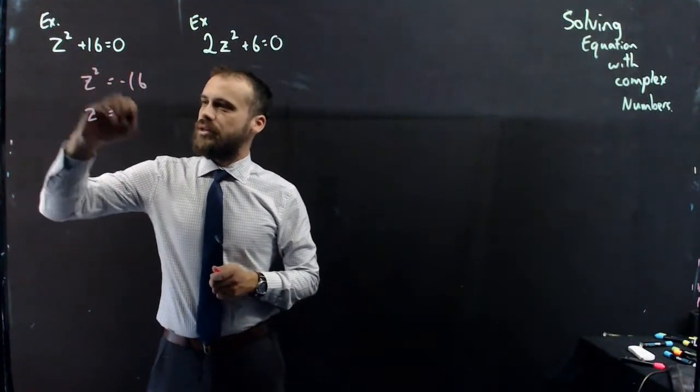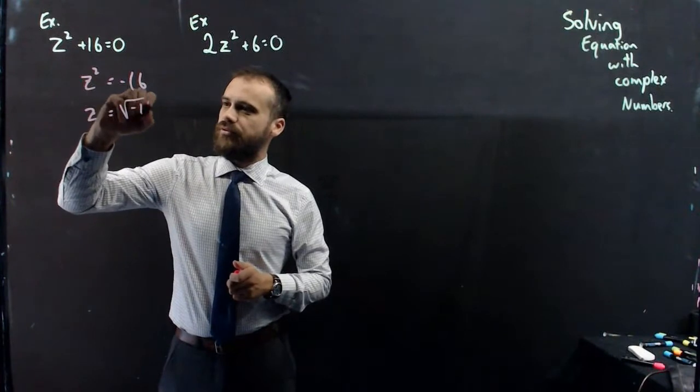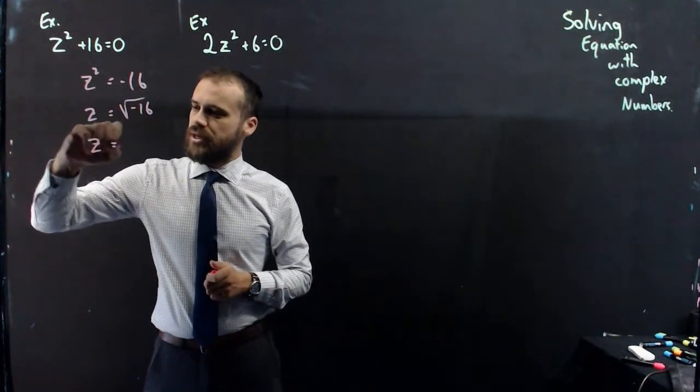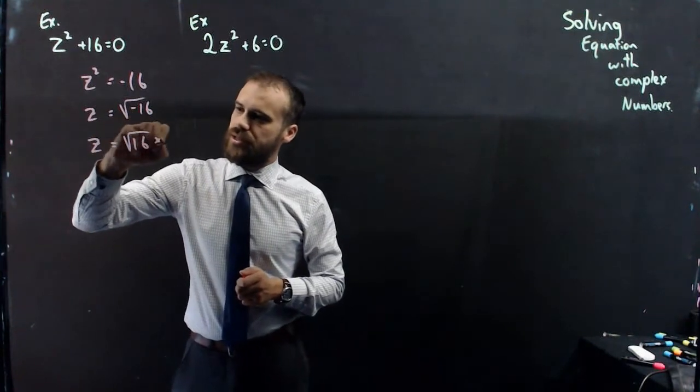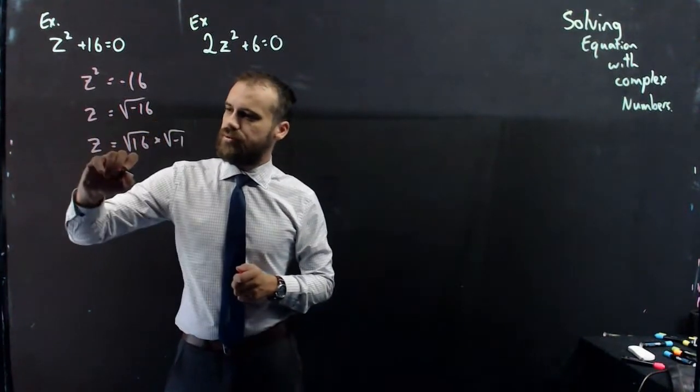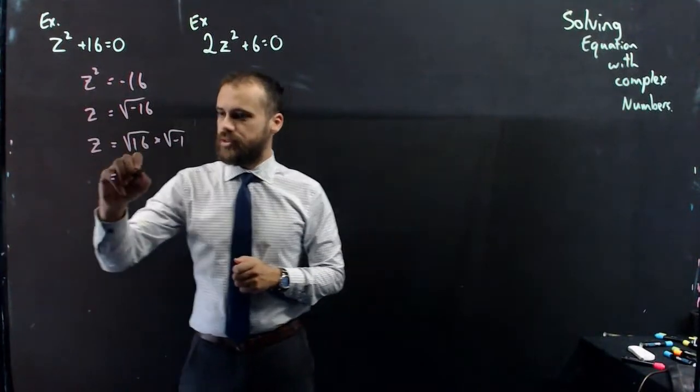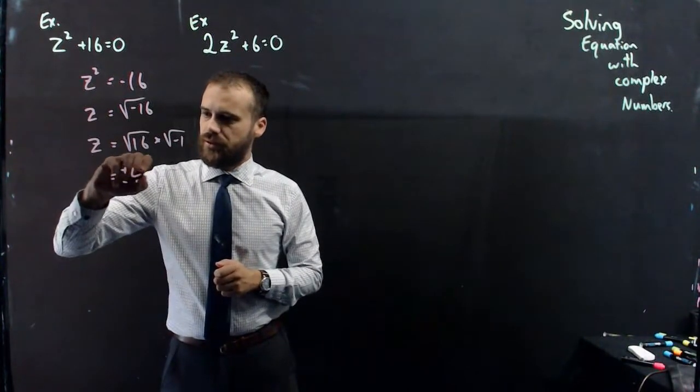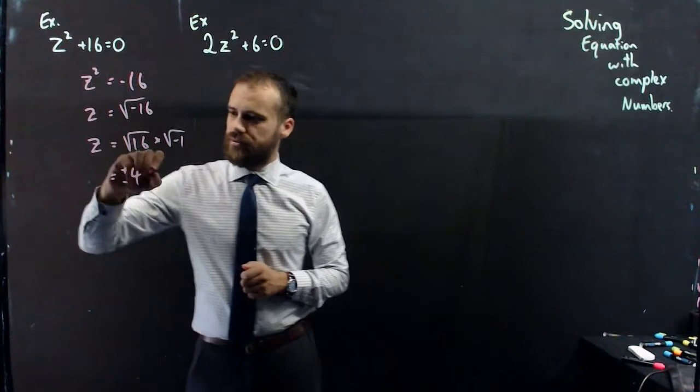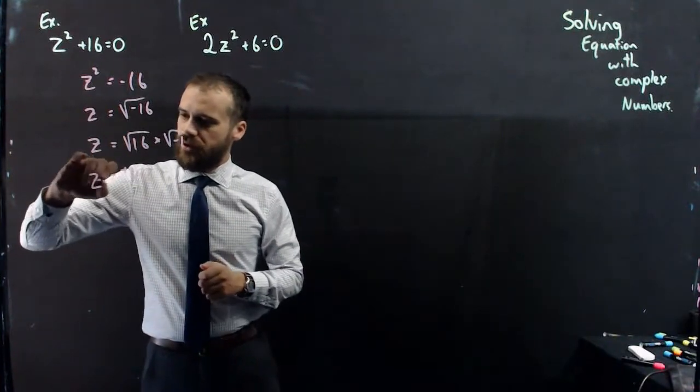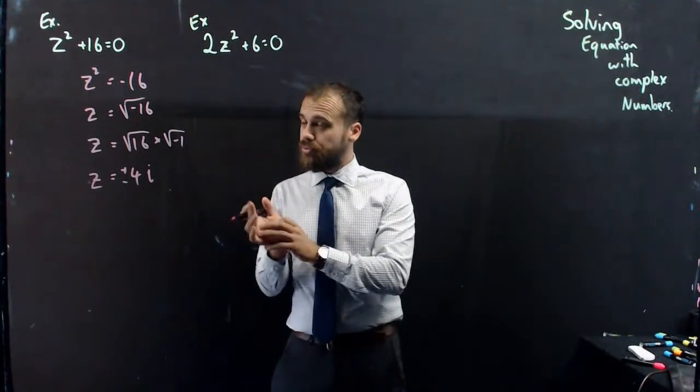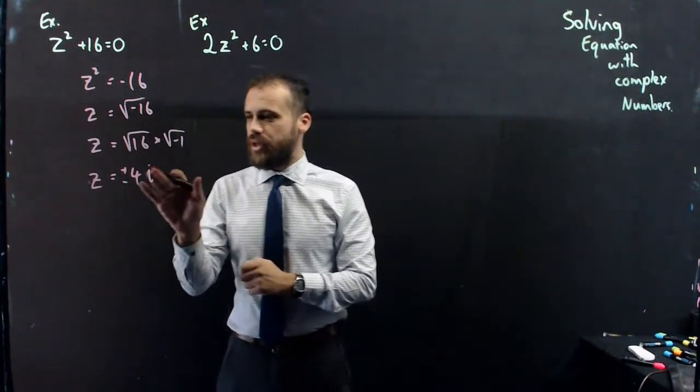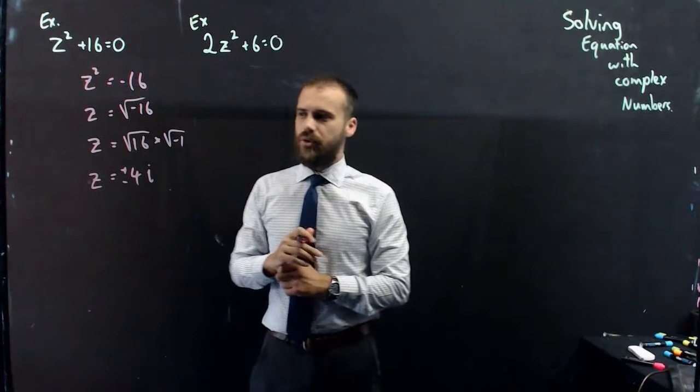z squared equals negative 16. Therefore, z equals the square root of negative 16. So z equals the square root of 16 times negative 1, that's plus or minus 4, and that is i. We have two solutions, both purely imaginary, positive 4i and negative 4i.